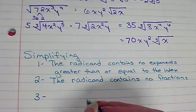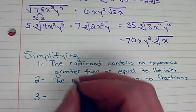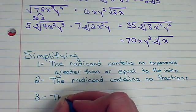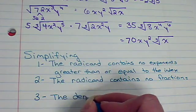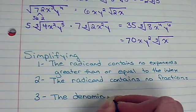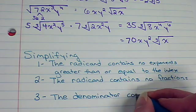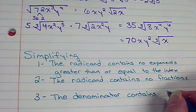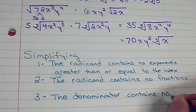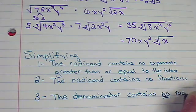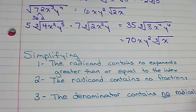But, the third rule makes a real situation sometimes. One thing we can't ever, ever, ever do. The denominator can never contain, so it contains no, no, no, no radicals.